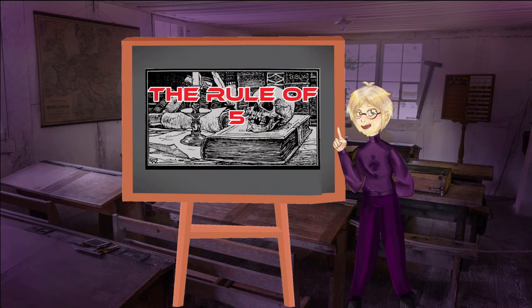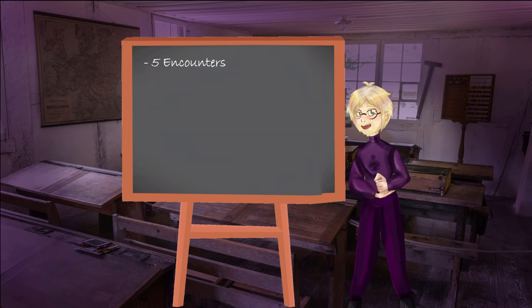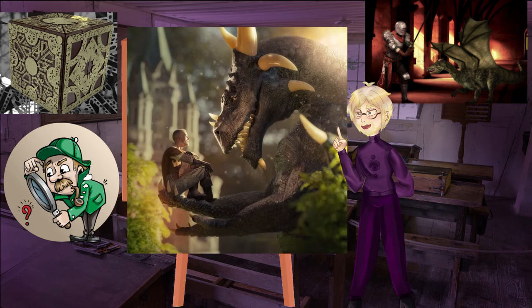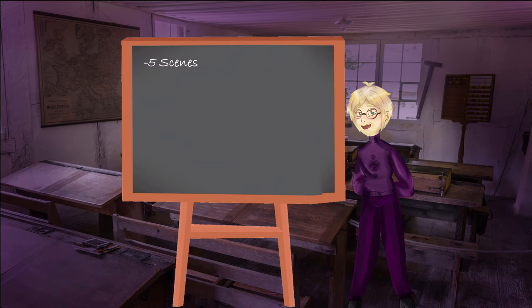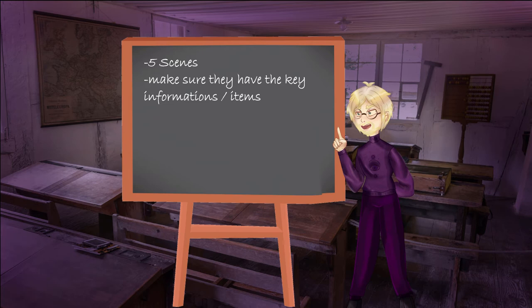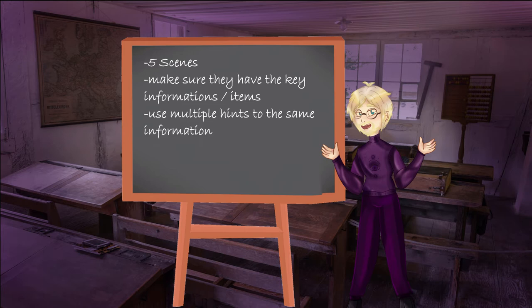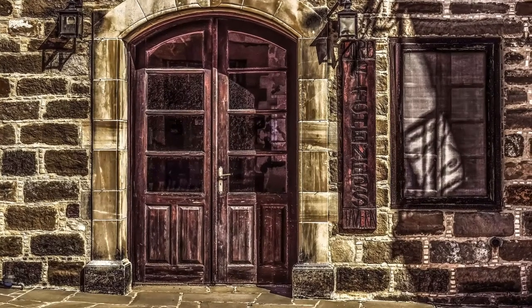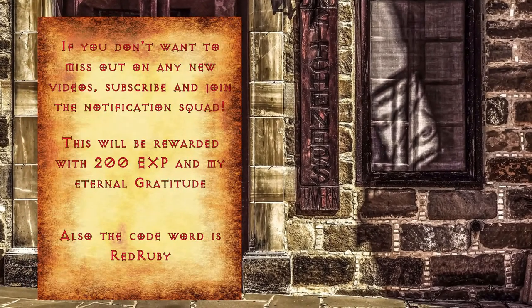Now let me tell you about the promised rule of five. With few exceptions I always use this rule when I craft one-shots. Five is just the perfect number of encounters to put in one session of gameplay — that doesn't mean combat encounters only, but also puzzles, exploration, and roleplay encounters. Imagine them like scenes in a movie: five different areas for the players to interact with. When they leave for the next one they should have everything they need to progress the story. Always include multiple hints all leading in the same direction so players are more likely to find one on their own.